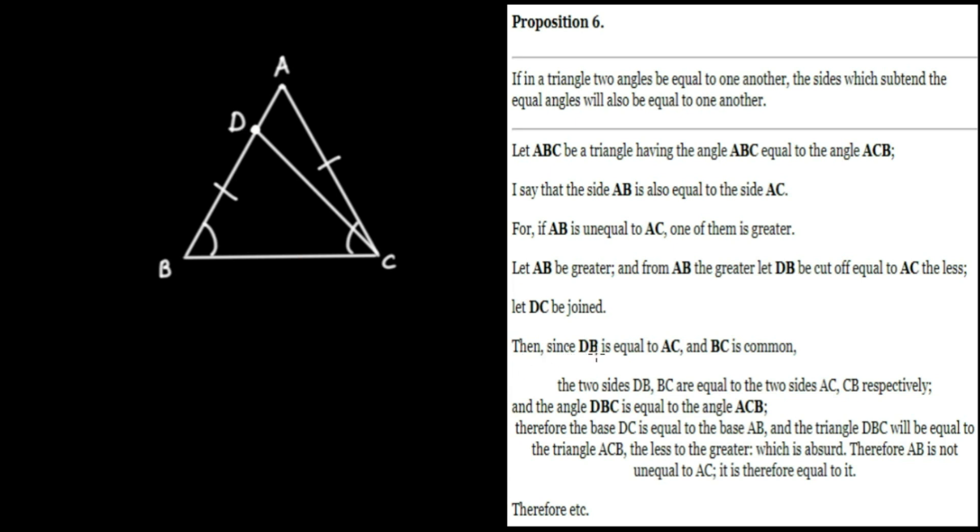Then, since DB, this is DB right here, is equal to AC, and BC is common. Let's highlight the common side. The two sides DB and BC are equal to the two sides AC and CB, respectively. That is, DB is equal to AC from that construction through proposition 3. And BC, BC is right here, is equal to CB, which is, of course, true.